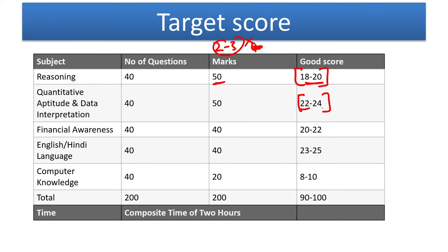In the financial awareness, 22-23 is a good score. In the English language, English or Hindi language, students scoring 25 plus is very common. If you are doubtful about choosing Hindi or English, always choose English. But if your Hindi is very good, then choose Hindi language.